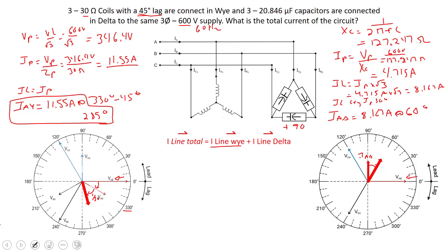Alright let's go ahead and add these up. One last step here, adding the two line currents at their angles. So IA total is going to be equal to IA of the Y plus line current IA of the delta at its angle.